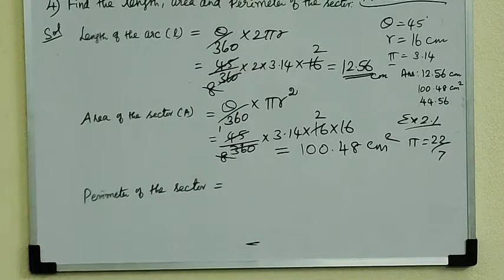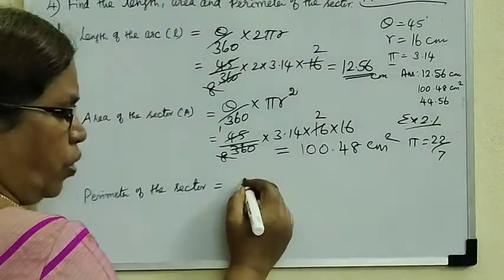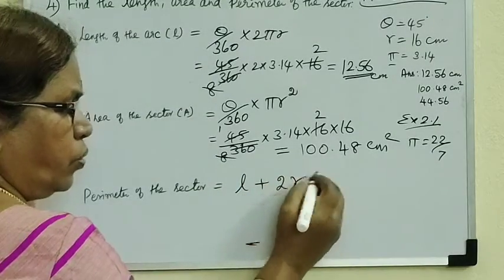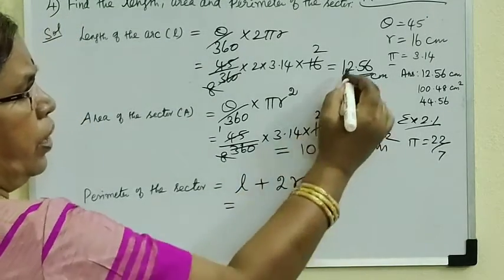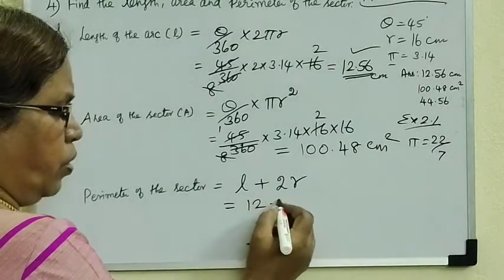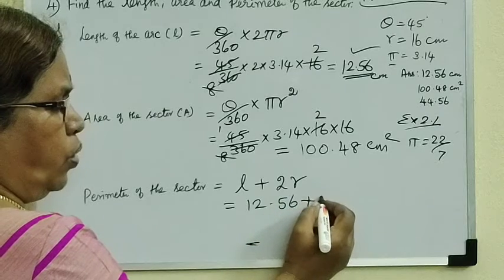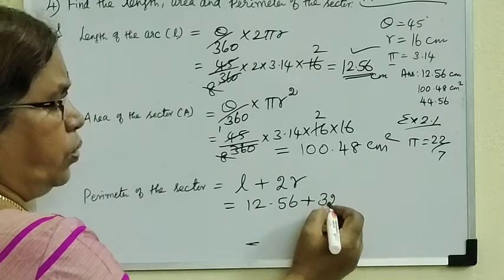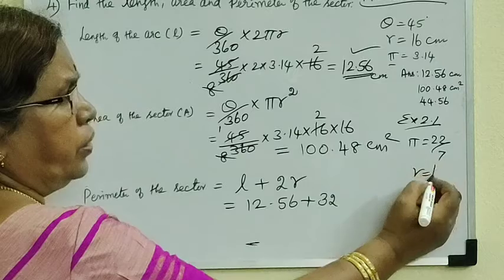Let's find the perimeter of the sector. Formula: L plus 2R. All the value is 12.56, so this is 12.56. 2R is 32 because R equal to 16.